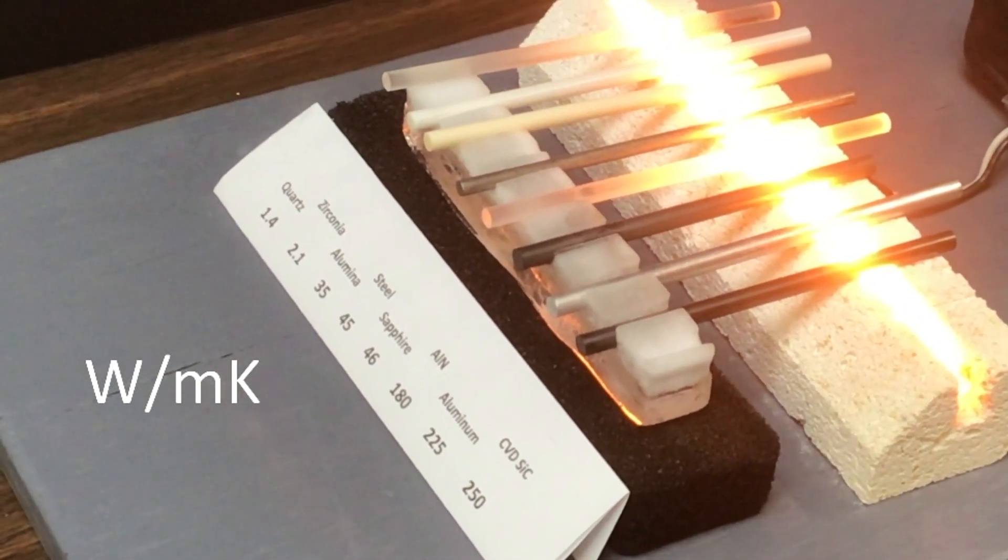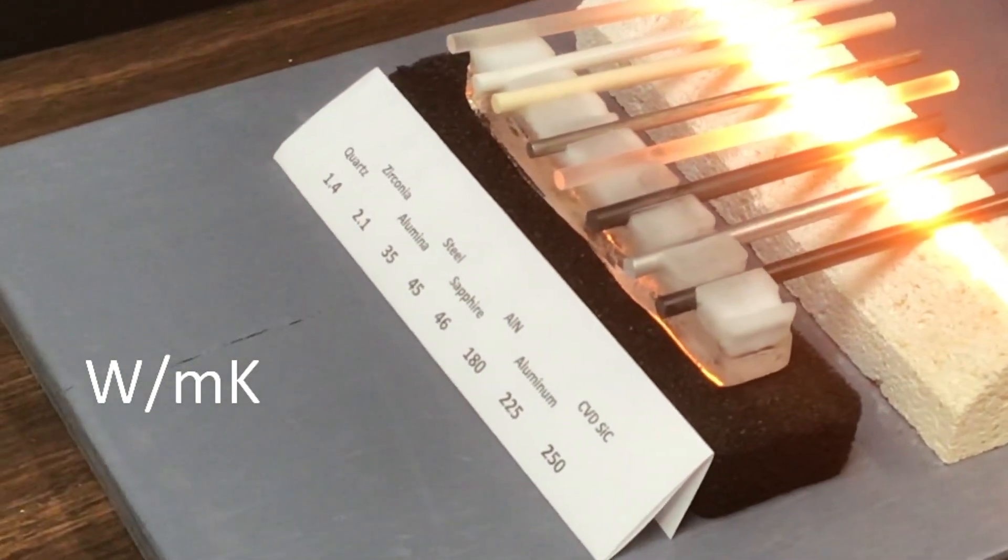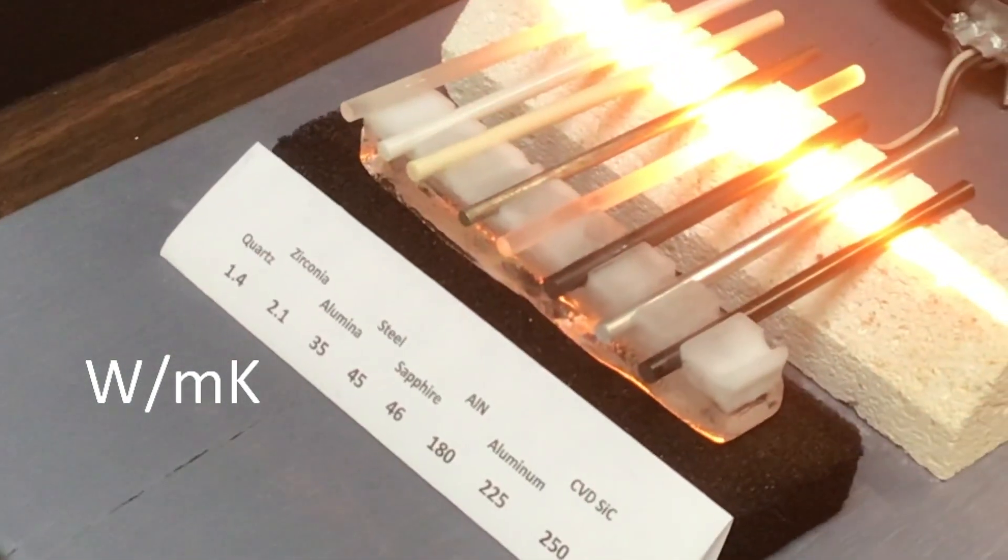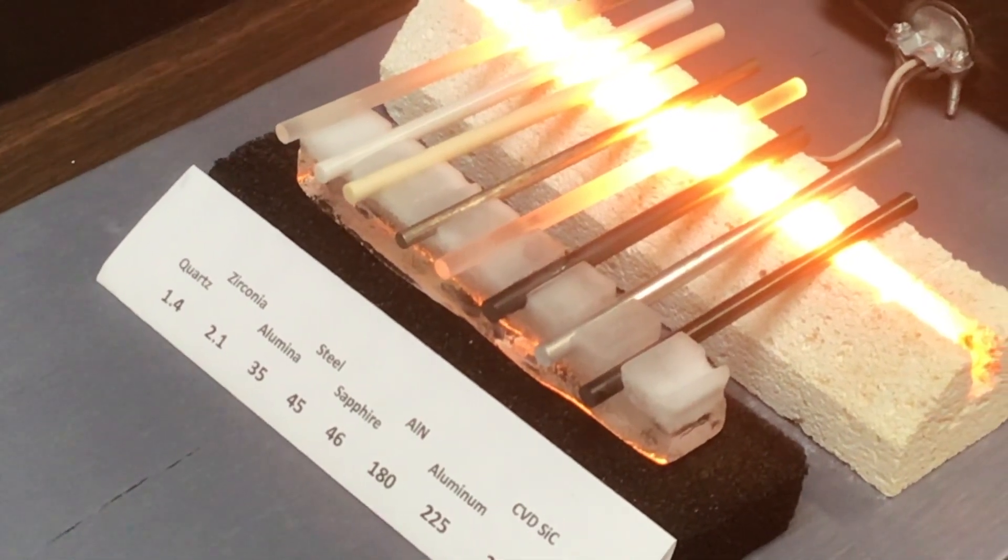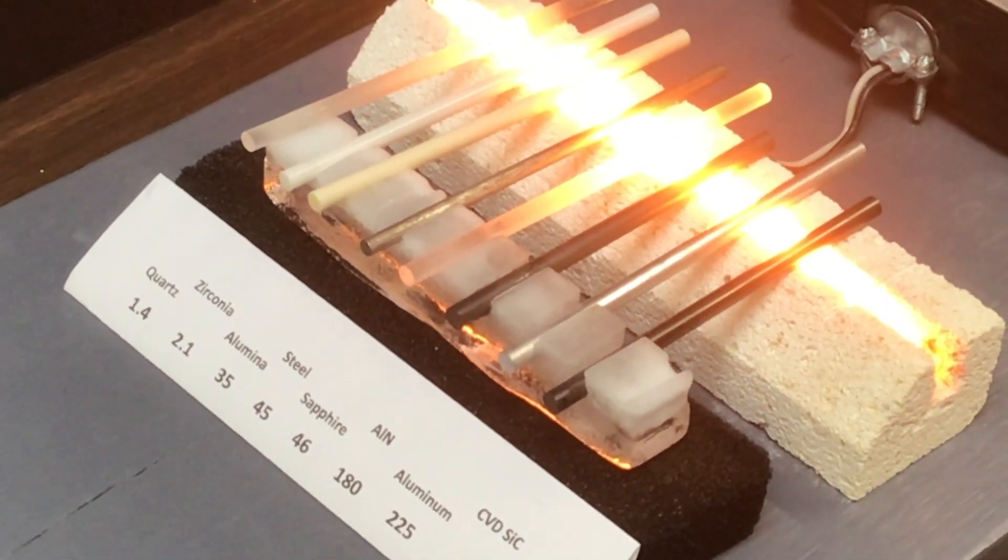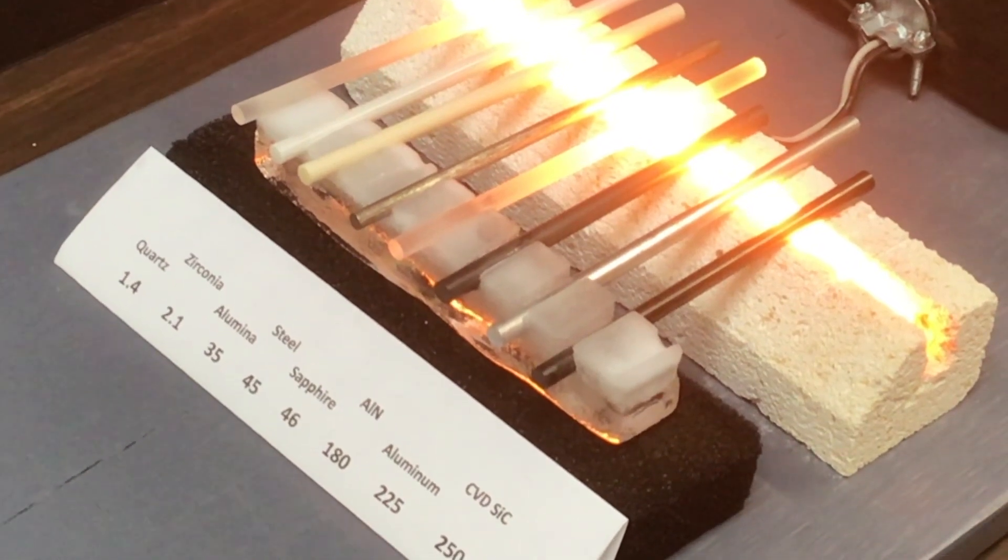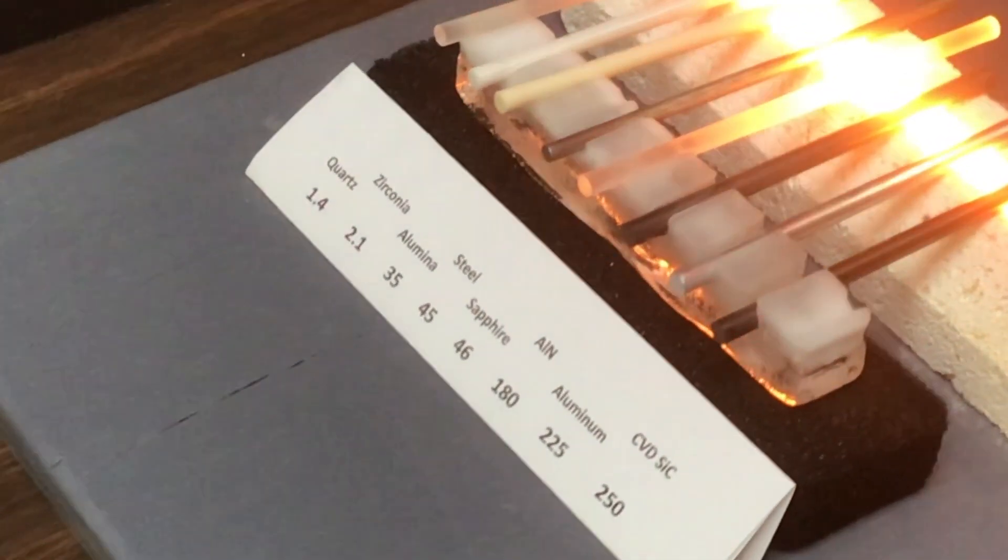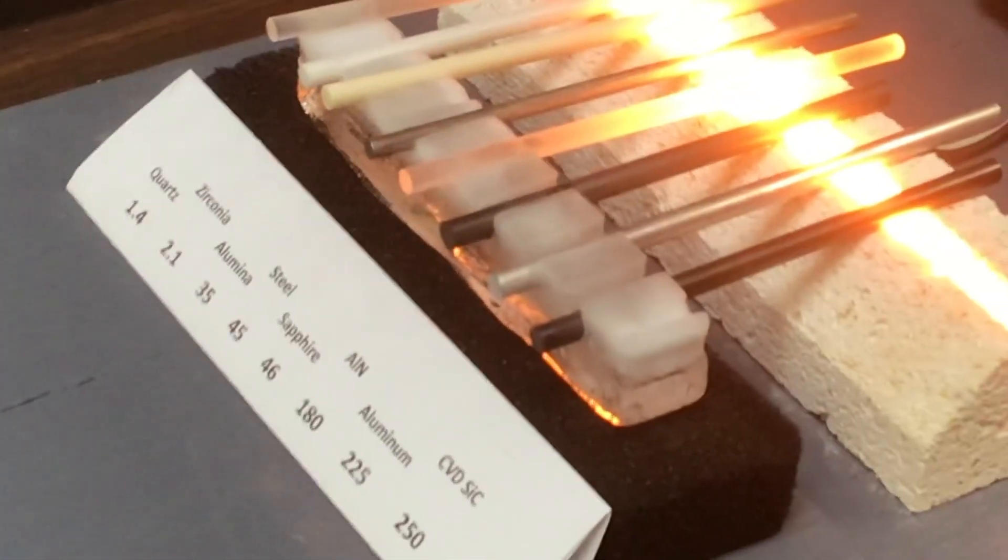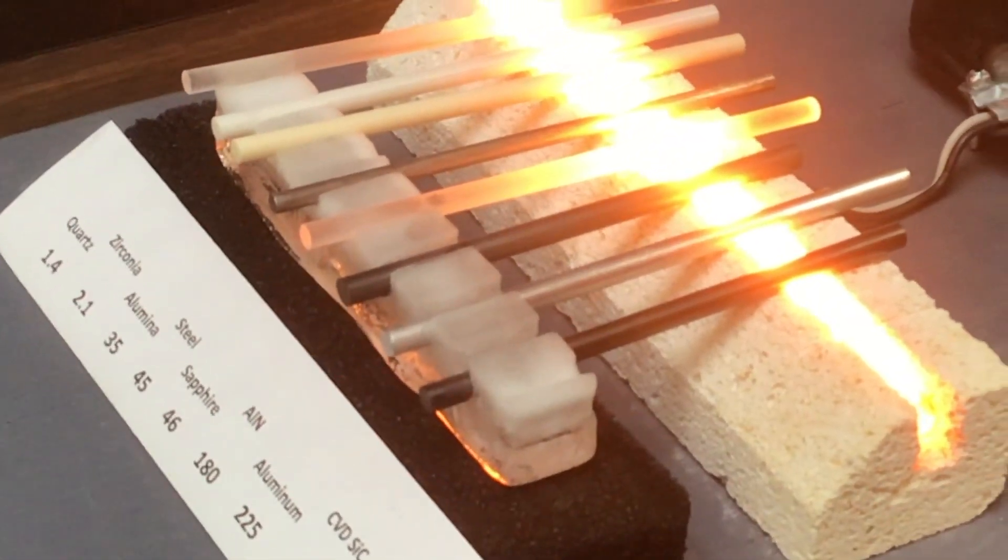At slightly lower conductivity than aluminum is aluminum nitride, which in turn melted into the ice at a slightly slower pace. Aluminum oxide or alumina and its single crystal form of sapphire transmit at a lower rate, but still melted significantly.